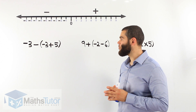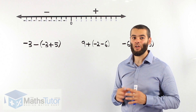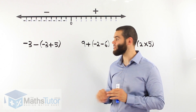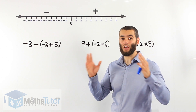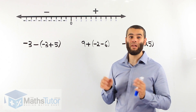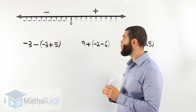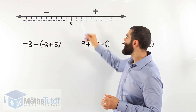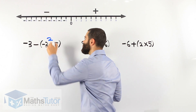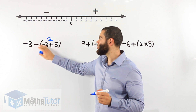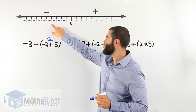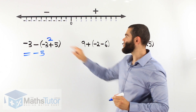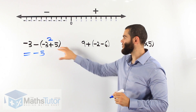In this example we have negative 3 minus, in brackets, negative 3 plus 5. We still follow order of operations — brackets first. Inside the brackets we have negative 3 plus 5: we start at negative 3, add 5 going right — 1, 2, 3, 4, 5 — our answer is 2. Now we have negative 3 minus 2 remaining. We start at negative 3 and minus 2: 1, 2. Our full answer is negative 5.